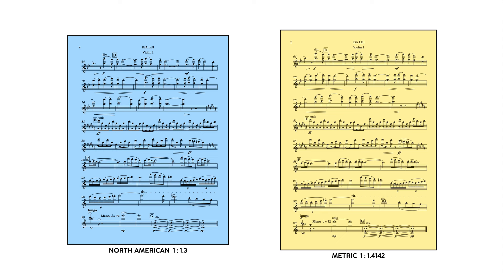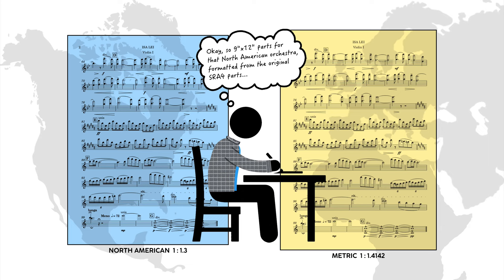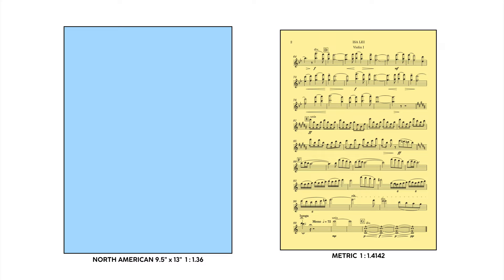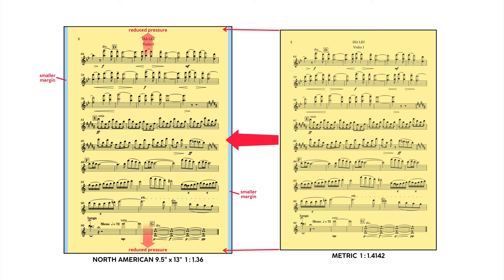It's not inconceivable that someday you may end up formatting two different parts sets for the same work, depending on which destination has ordered the parts, sometimes at the request of the librarian. One cool little footnote here is that the page size of 9.5 by 13 inches has a ratio of 1 to 1.36, which is very close to metric paper's 1 to 1.4142. So the proportions of one should scale fairly well to the other with little or no adjustment needed — something to think about if you're printing your own parts in North America but sending out PDFs internationally, or vice versa.